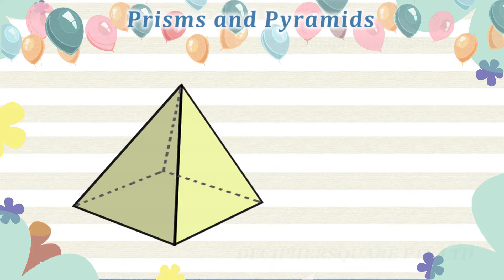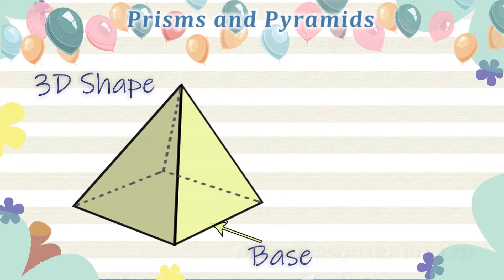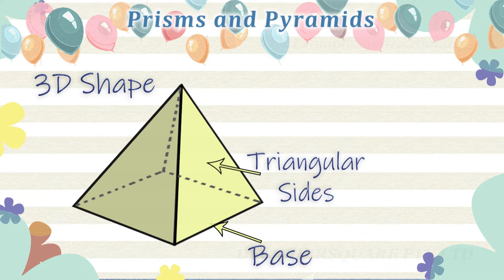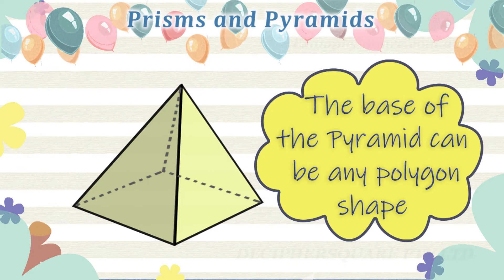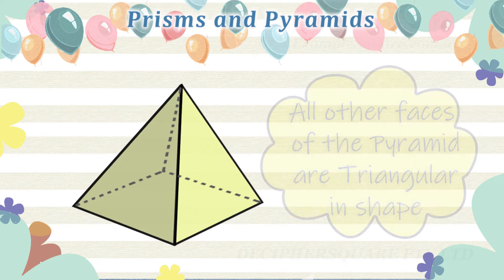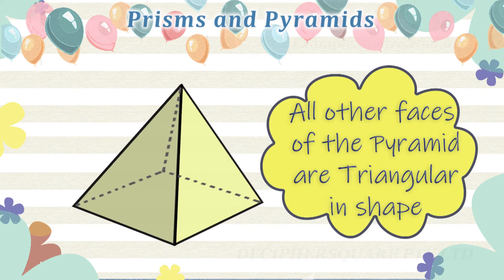What is a pyramid? A pyramid is a three-dimensional shape with a single polygon shape base and flat triangular sides that meet at the common top point called the apex. The base of the pyramid can be any polygon shape. All other faces of a pyramid are triangular.